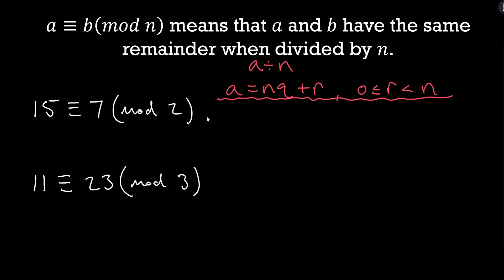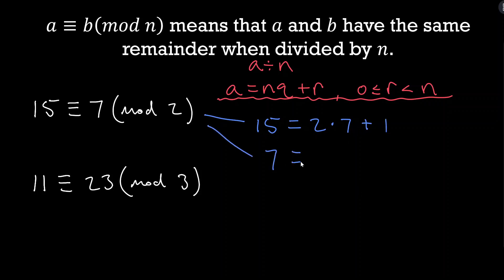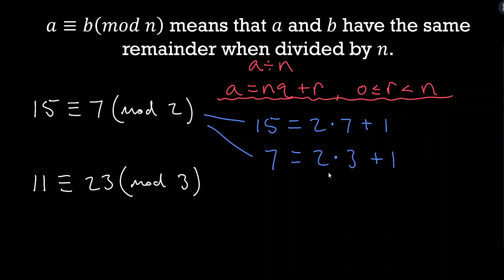Using this, we can write out: 15 equals 2 times 7 plus 1, and 7 equals 2 times 3 plus 1. We can see the remainders are the same, therefore they're congruent mod 2, as we previously discussed.